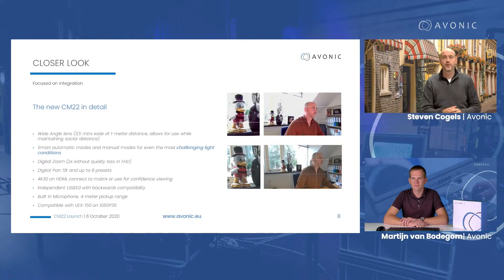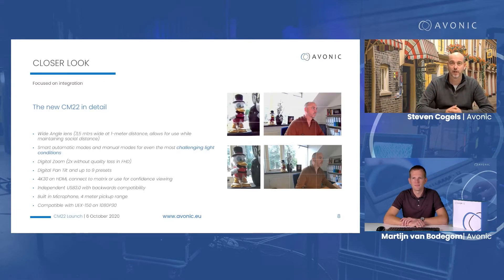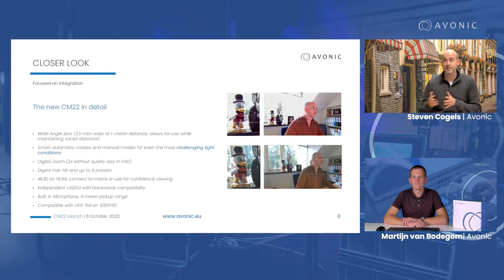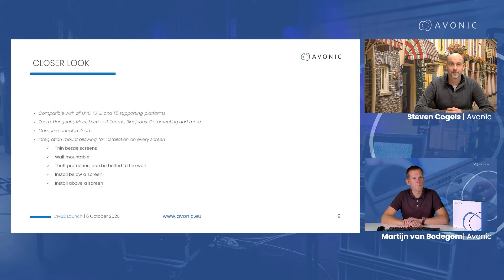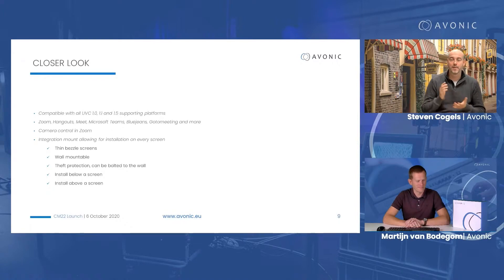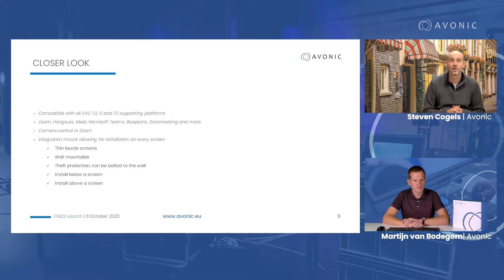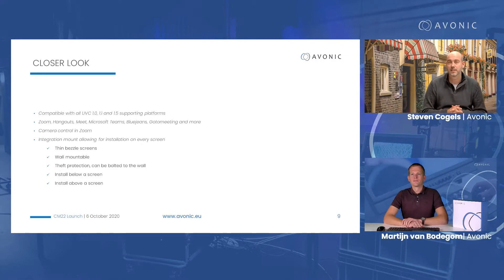The camera has a built-in dual microphone with a pickup range of 4 meters, including algorithms to filter out background noise. It's compatible with USB 2.0, which means it is also compatible with our UEX 150 extender, though that limits output to 1080p 30. The product is compatible with UVC standards — we support all of them — which means it's automatically compatible with Zoom, Google Hangouts, Google Meet, Microsoft Teams, BlueJeans, GoToMeeting, and any platform that accepts a standard USB camera.